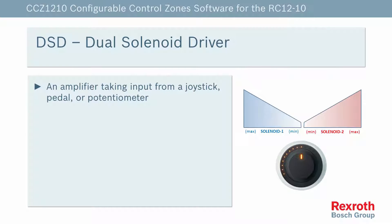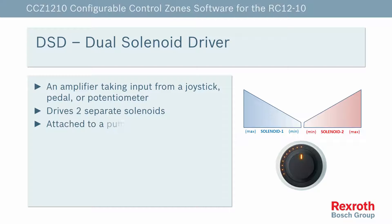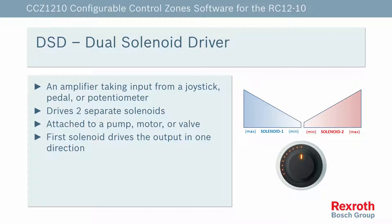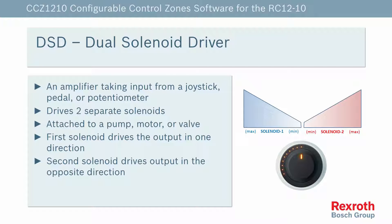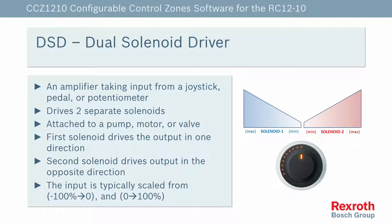The dual solenoid driver is essentially an amplifier that takes input from a joystick, a foot pedal, or some sort of potentiometer, and then drives two separate solenoids. Typically, the solenoids are attached to a pump, a motor, or a valve. The first solenoid drives the output in one direction, and then the second solenoid drives the output in the opposite direction. The input is typically scaled from minus 100 to zero, and then zero to 100%.